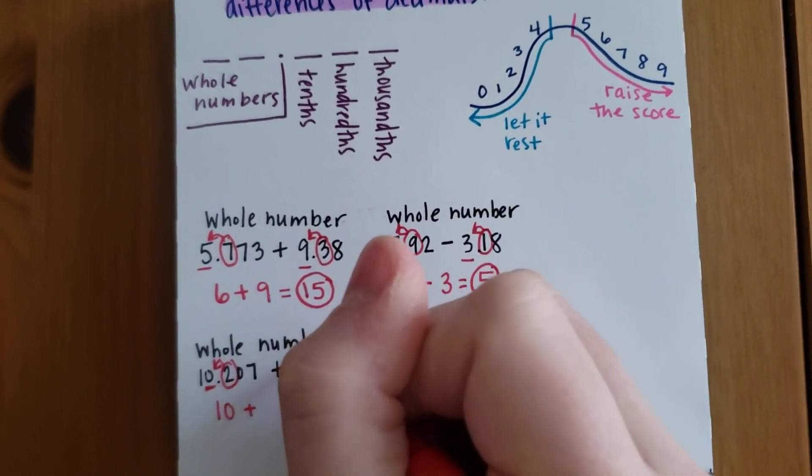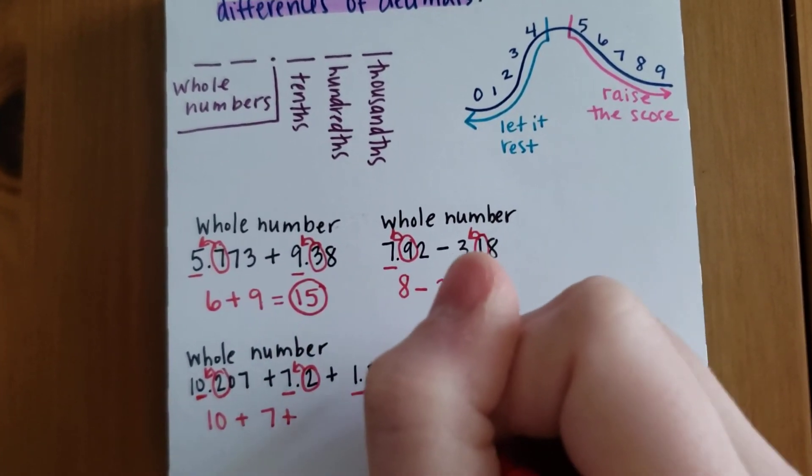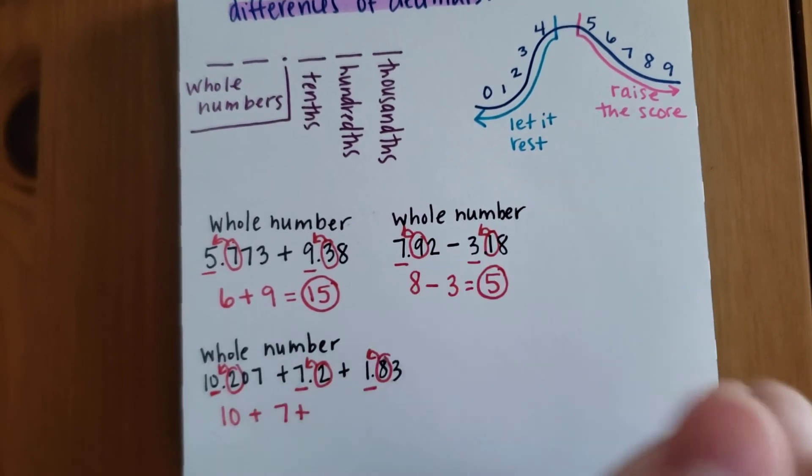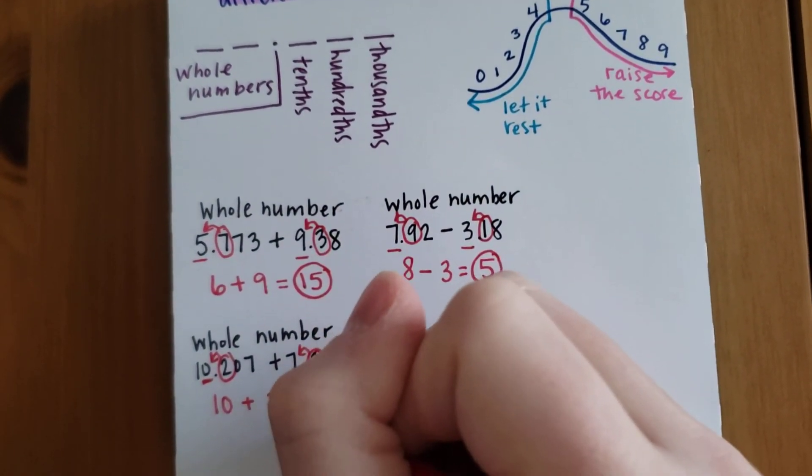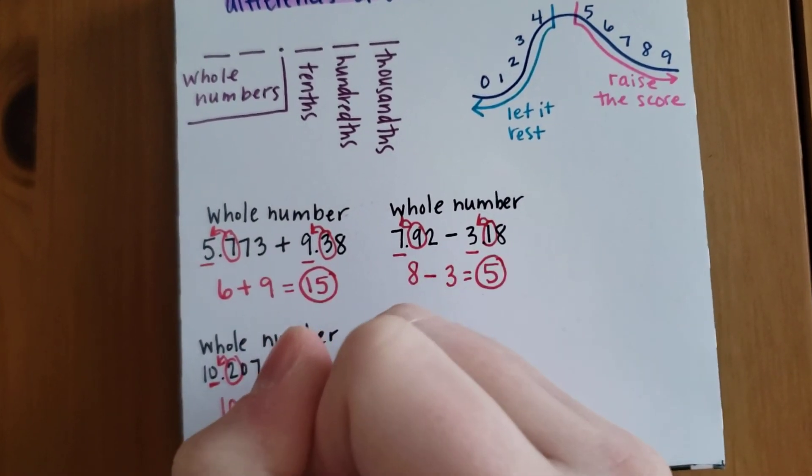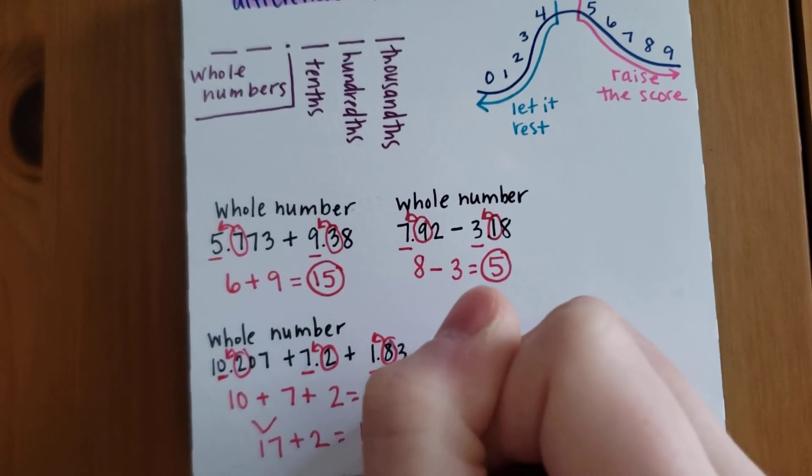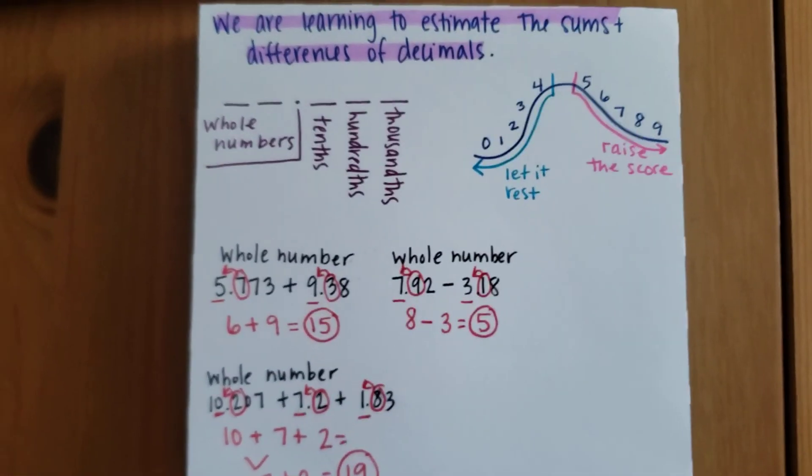The 2 here is telling our 7 to stay the same. And here, our 8 is going to tell our 1 to move up, so that's going to turn into a 2. 10 plus 7, if I wanted to work this out, would be 17 plus 2, which equals 19. So our final answer would be 19.